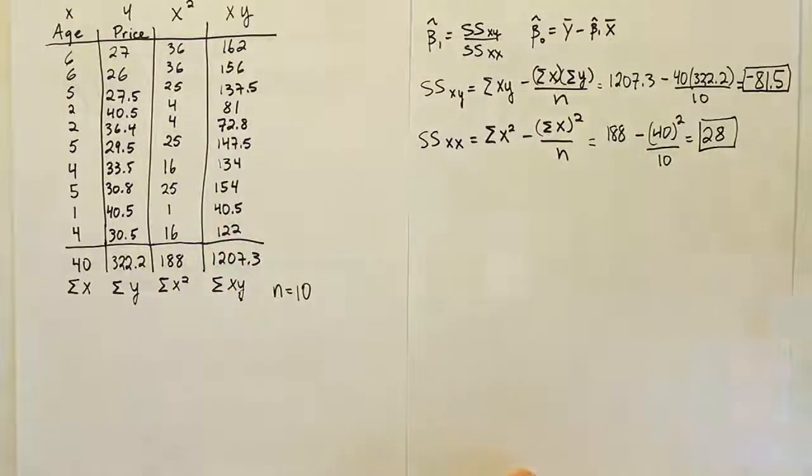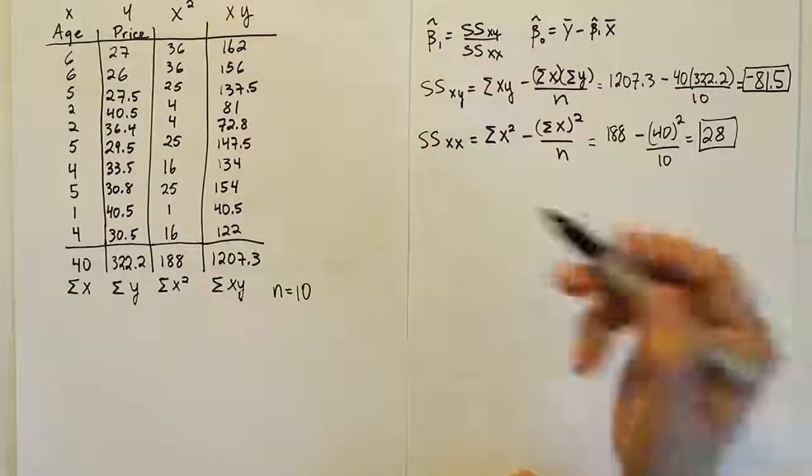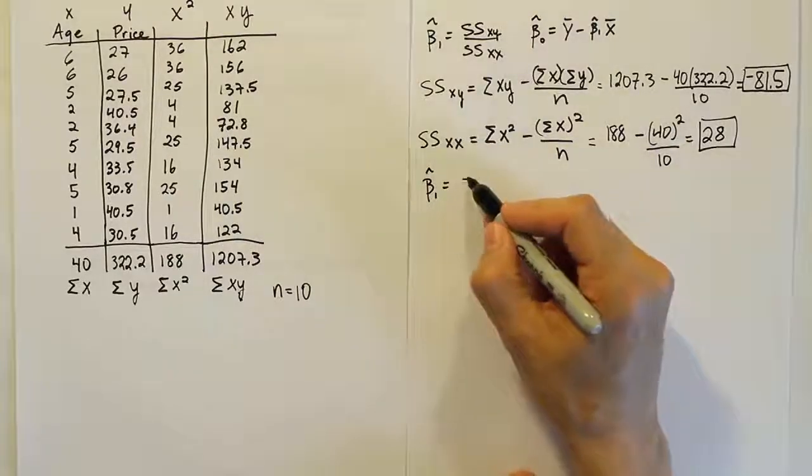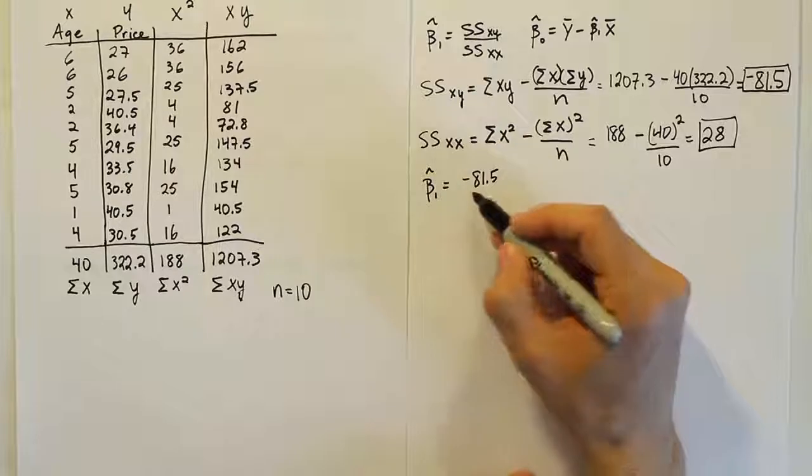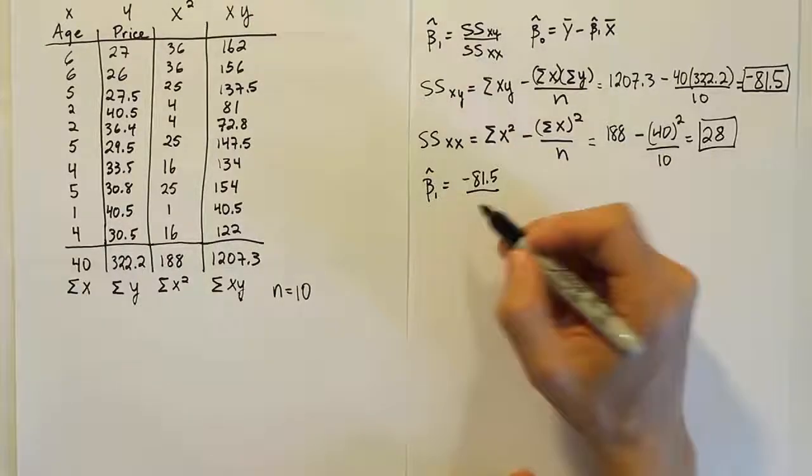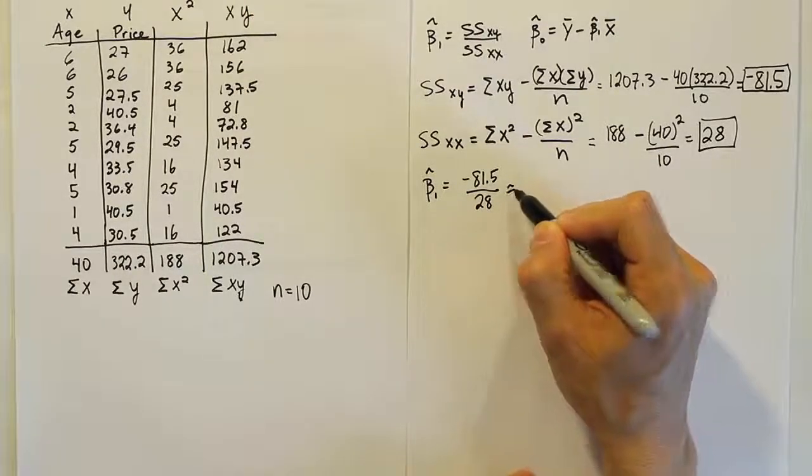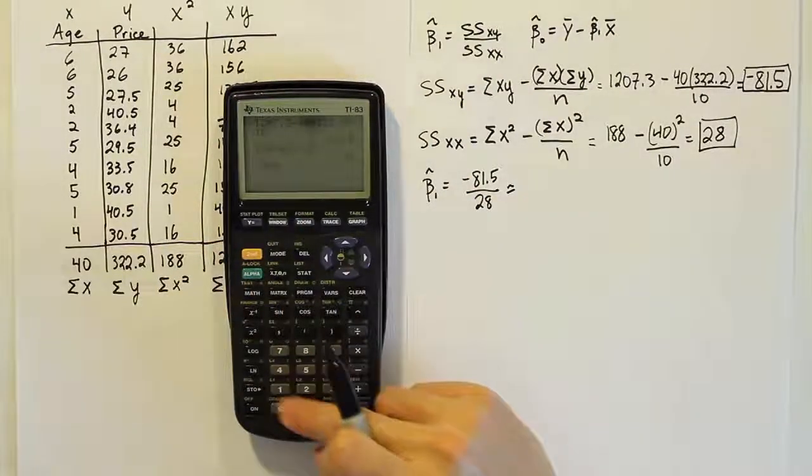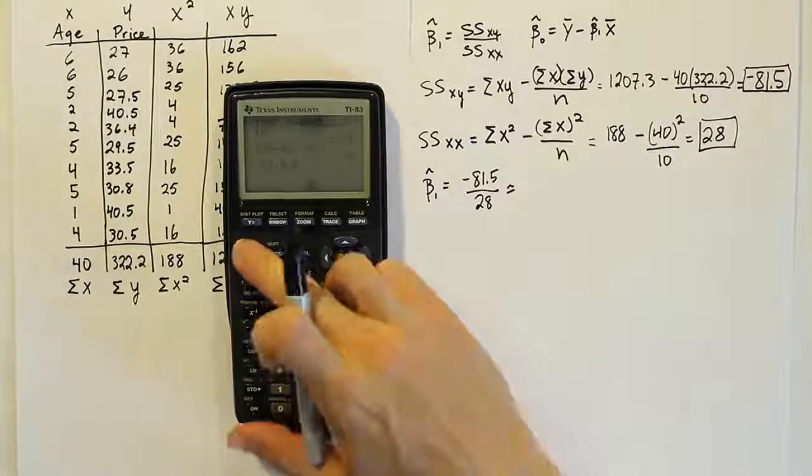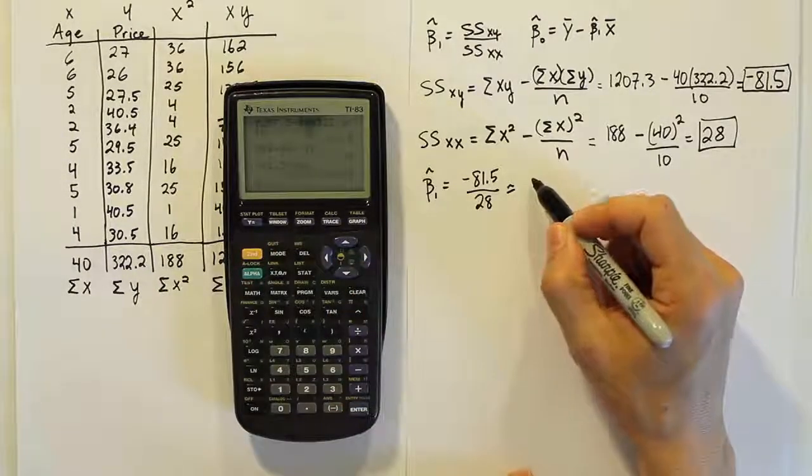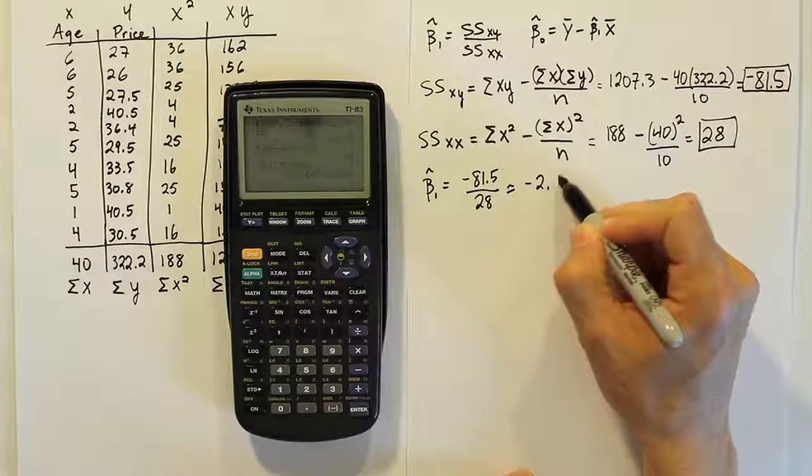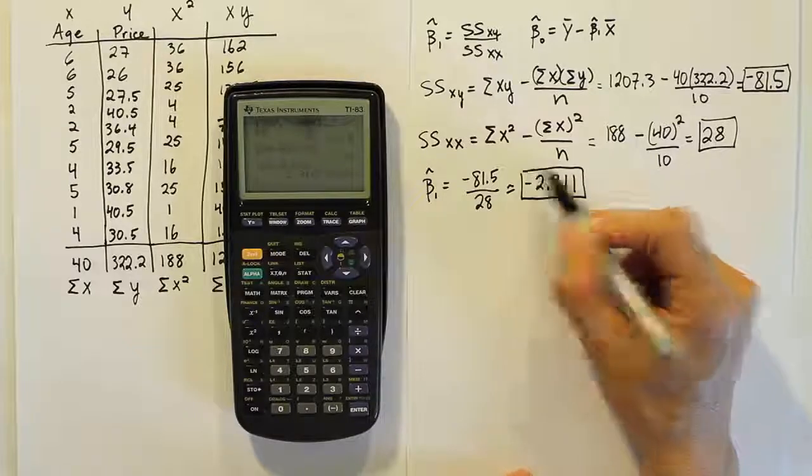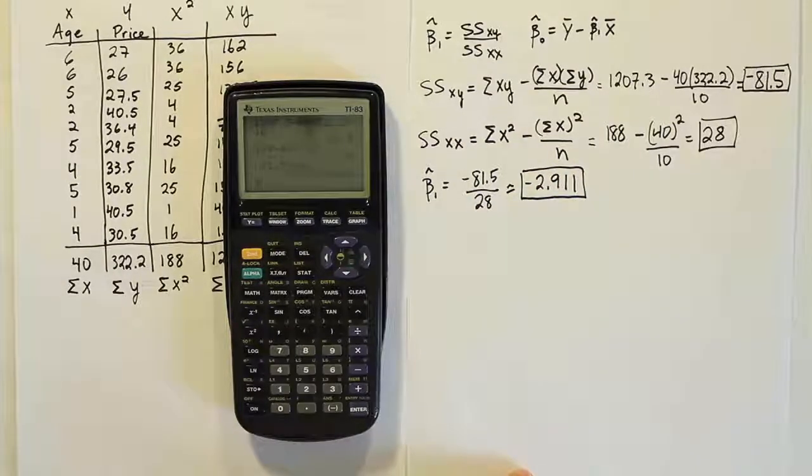Our next step is to simply take those two numbers and plug them into the formula for the slope. So beta 1 hat will be the first one, negative 81.5, the mixed term, sum of square xy, divided by the x term. Remember, the x term always goes at the bottom, and let's see what that gives us as our answer then. So we'll have minus 81.5 divided by the number we just had, which is 28, and we get negative 2.911. So rounding three decimal places after the decimal point, we get a negative 2.911.